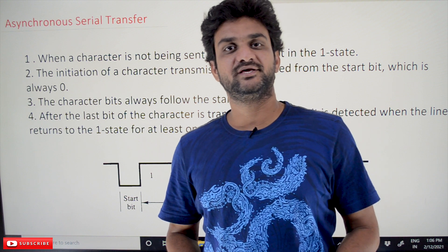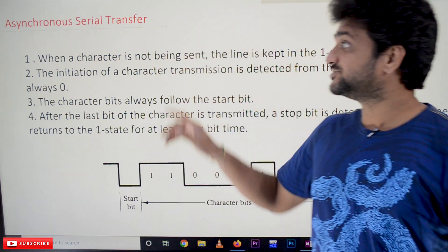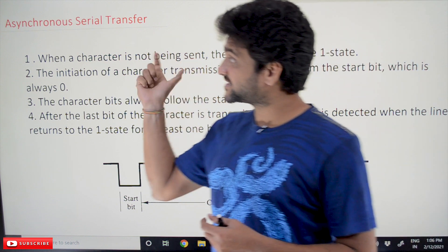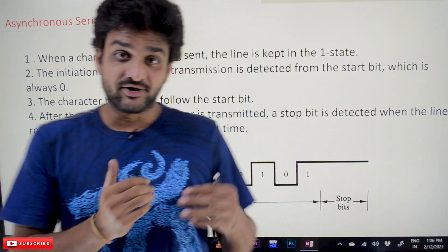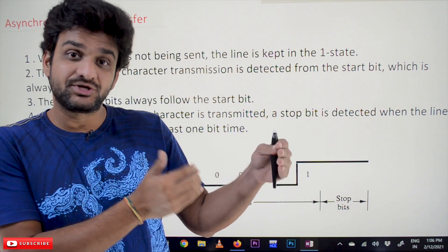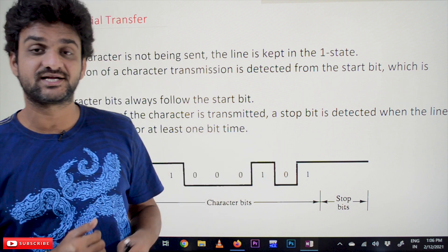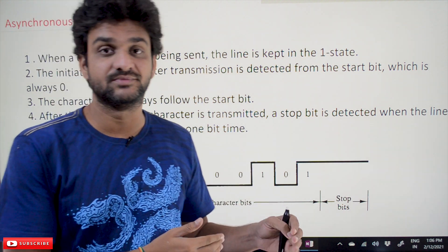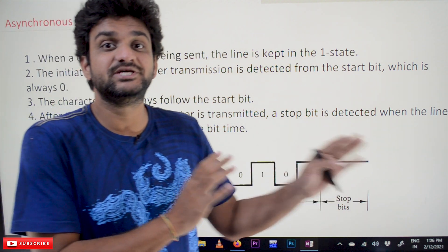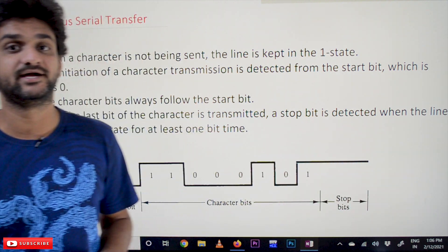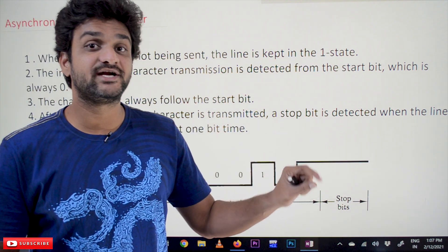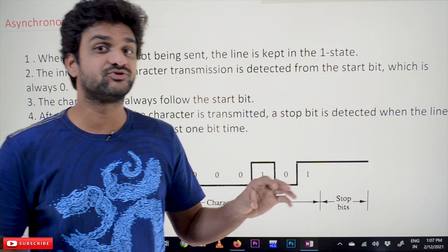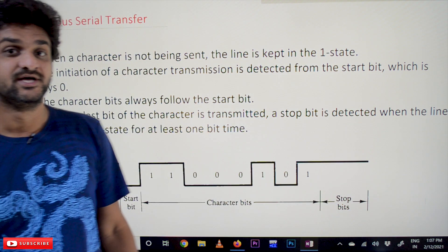Hi, welcome to Learning Monkey. I am Vikram. In this class we'll try to understand asynchronous serial transfer. This is another kind of asynchronous transfer. In our previous class we have seen two different mechanisms of asynchronous data transfer: strobe control mechanism and handshaking mechanism. If you haven't watched those videos, please watch those videos and come back here. Every video in our channel is part of an entire course or playlist, and our suggestion is to follow the entire course for a better understanding.